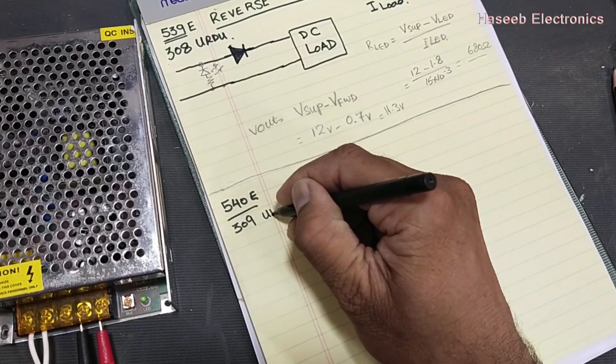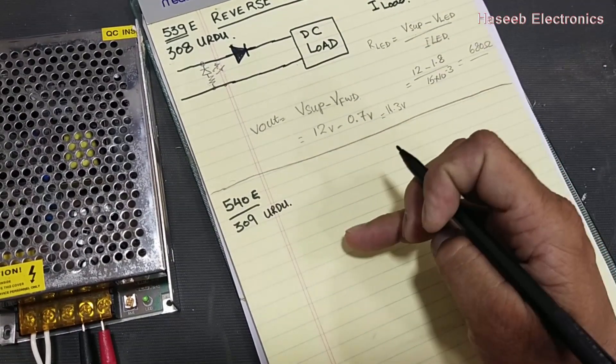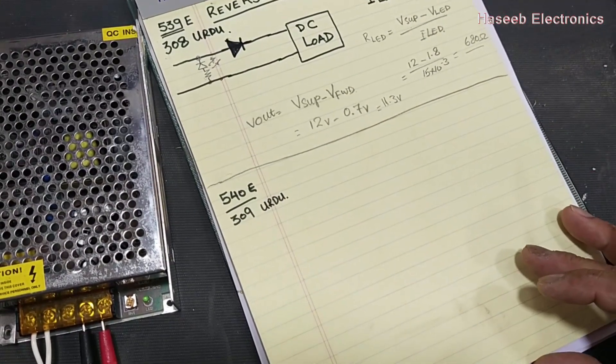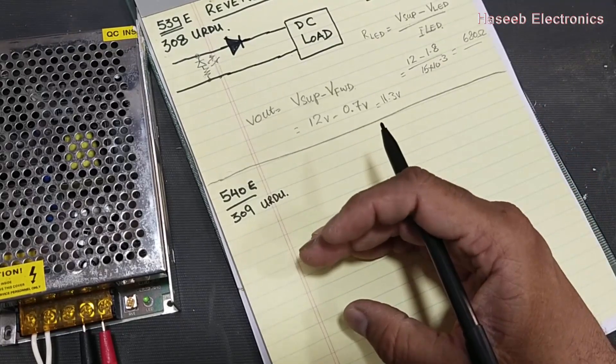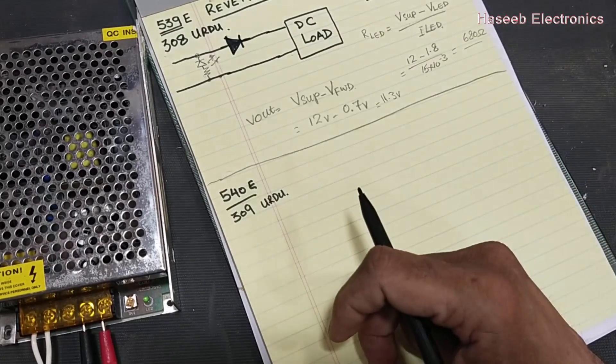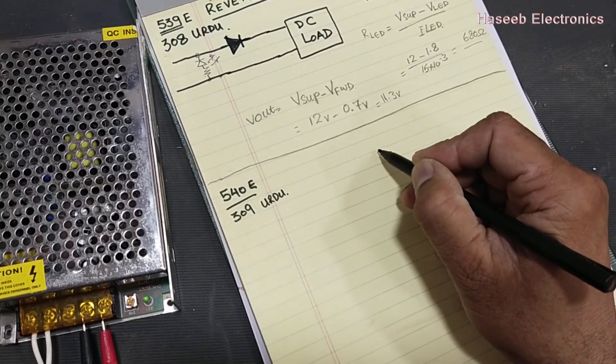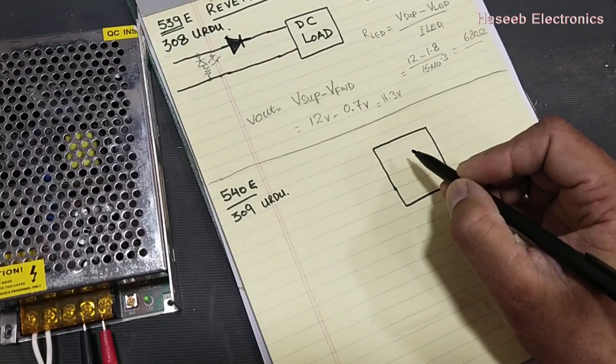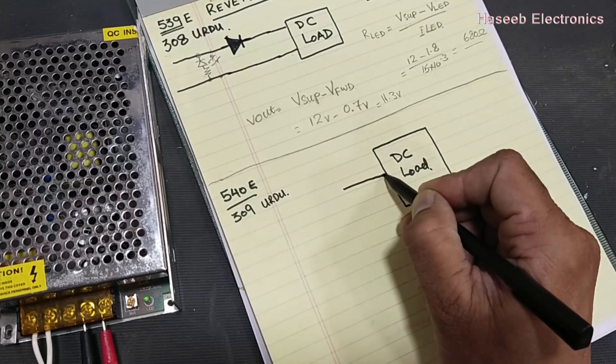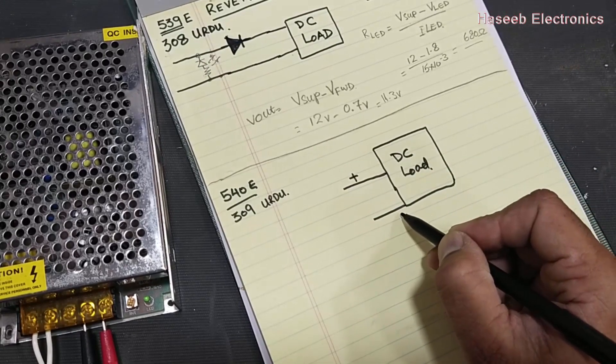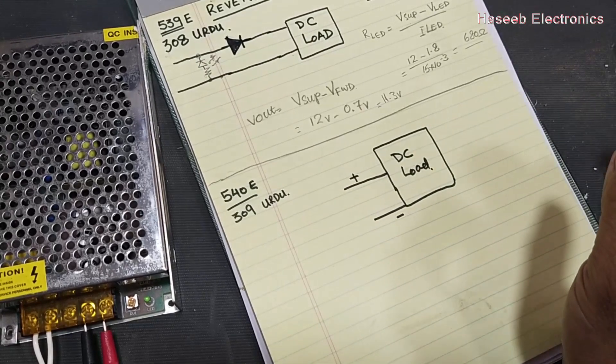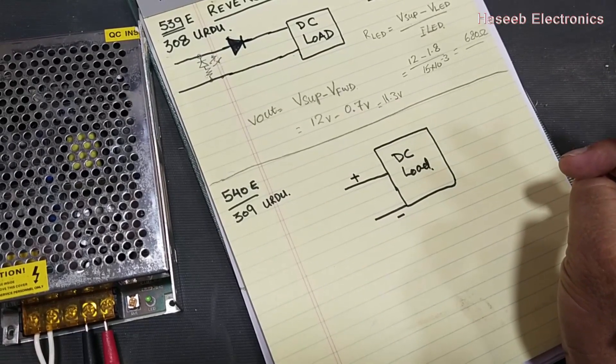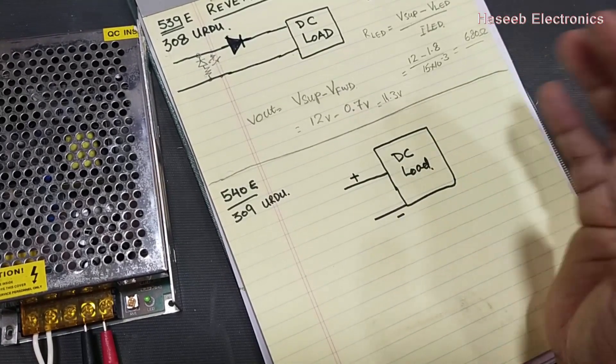In this video we will discuss how we can protect our circuit from DC reverse polarity. For example, we have a circuit here that is much sensitive for DC polarity. If you connect positive voltage here and ground line here, it will work perfectly. Anytime if we reverse the polarity, it will damage the load.